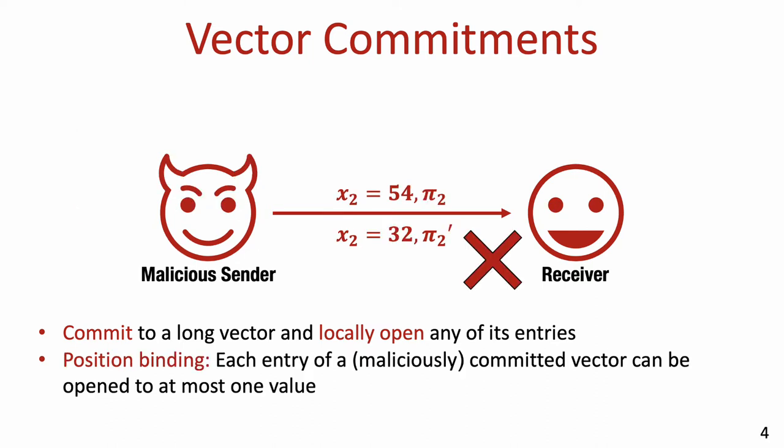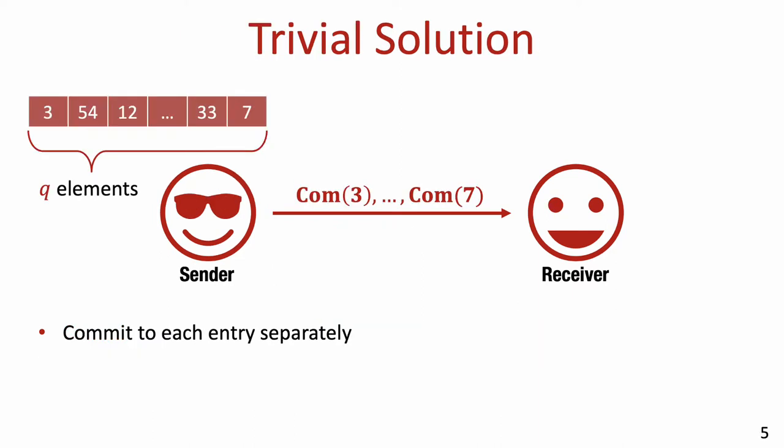The security requirement of such commitments is position binding. An adversary shouldn't be able to produce a commitment and then open one of its entries to two different values. Without any further requirements, a trivial solution is to simply have the committer commit to each entry of the vector independently, using some standard non-interactive commitment scheme.